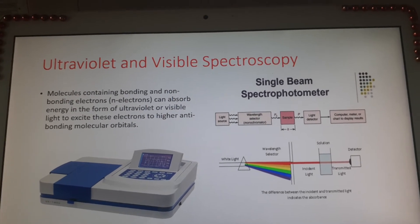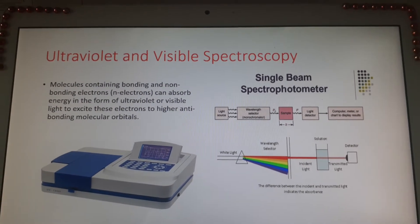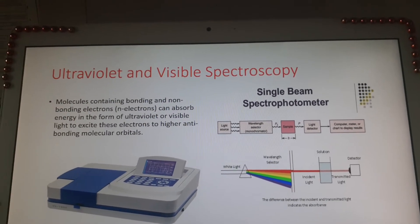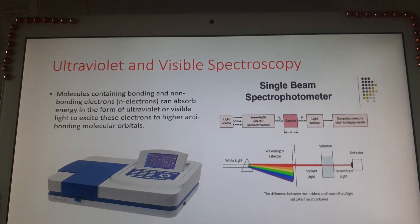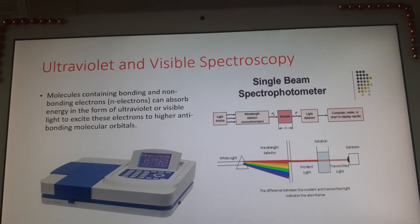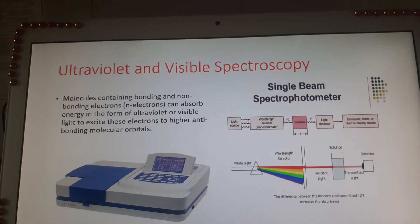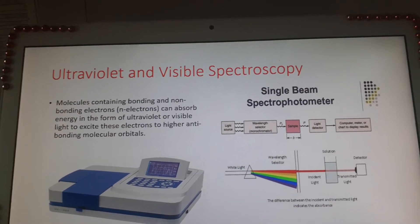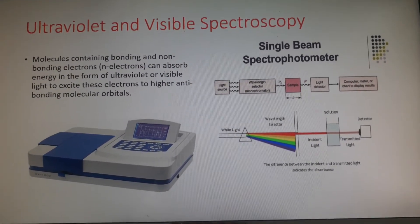UV-visible spectroscopy is also used to identify the presence of free electrons and double bonds within a molecule. It is a valuable technique for the identification of organic compounds, and gives information about the presence or absence of multiple bonded systems, conjugated systems, aromatic systems, and heteroaromatic systems. It is used in the determination of certain functional groups in organic compounds and to find the concentration of protein and DNA in a solution.